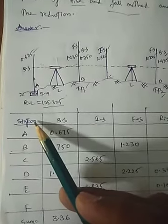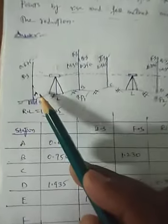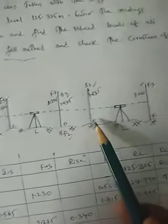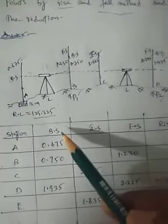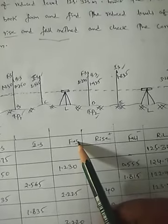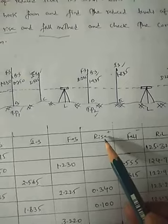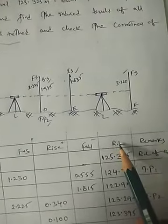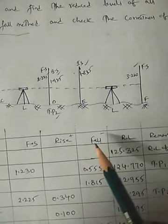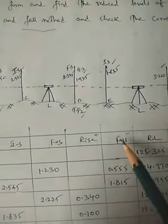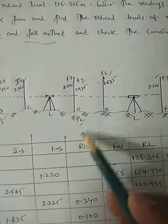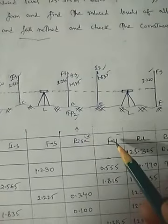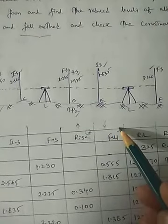The first column is station. We count the stations: A, B, C, D, E, F. Write them in the table. Then the table columns are: backsight, intermediate sight, foresight, and since this is rise and fall method, we write rise and fall — not height of instrument. Then RL (reduced level) and remarks. Rise means the ground level is increasing (positive), and fall means the ground level is decreasing (negative).